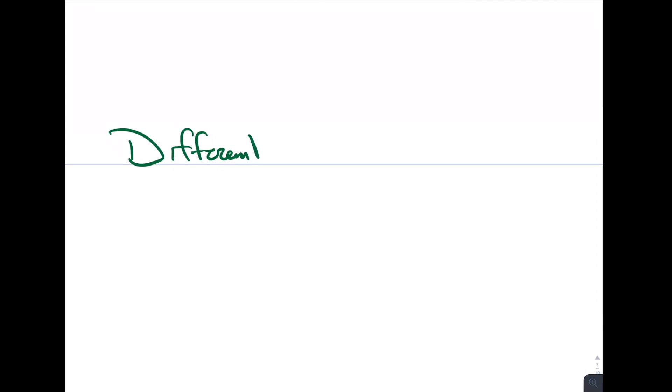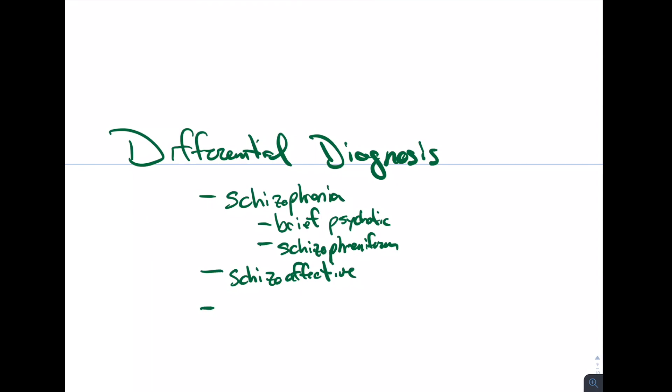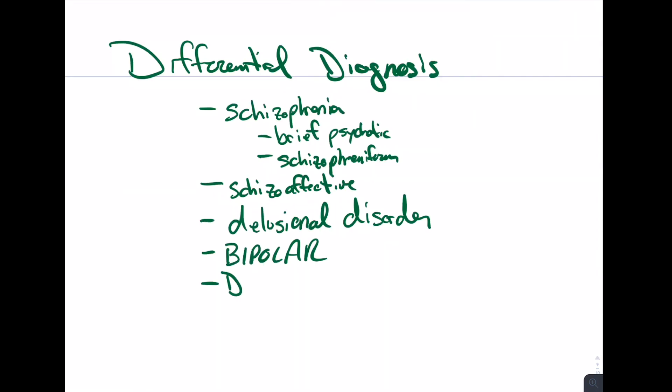Now if someone has these symptoms, what is our differential diagnosis? Well it could be schizophrenia, or it could be the variations of schizophrenia like brief psychotic disorder or schizophreniform. It could be schizoaffective disorder. It could be a delusional disorder. It could be bipolar, or dementia, or substance abuse.